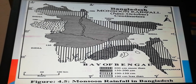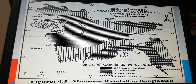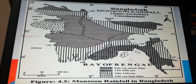Looking at the rainfall map of our country, we can see the highest rainfall areas are the darker upper regions. There are three regions: southern, northeastern, and northwestern, which receive more than 200 centimeters of rainfall during the rainy season. The second highest rainfall is in the middle part of the country. The least rainfall — less than 100 centimeters — is seen in the Rajshahi division region.